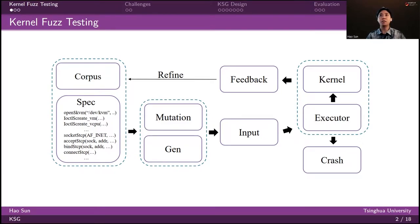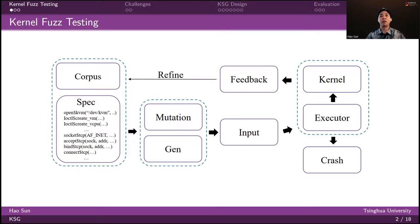Then, the generated input, which is a system call sequence, is fed into the executor that runs inside the target kernel. After execution, they gather feedback — for example, the coverage information is sent back to the fuzzer, based on which the fuzzer continuously updates the internal state, for example, the corpus. Meanwhile, the triggered crashes are saved locally for further investigation.